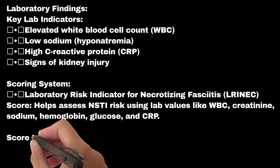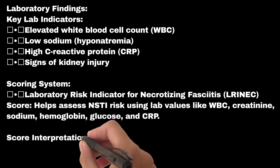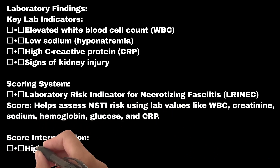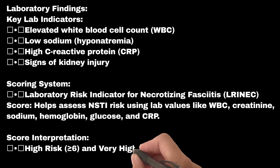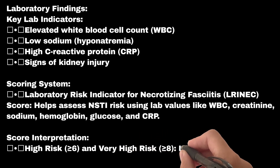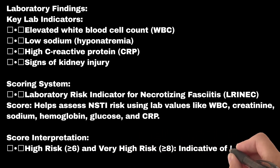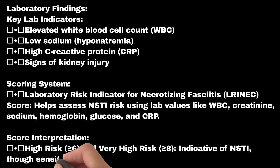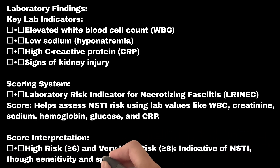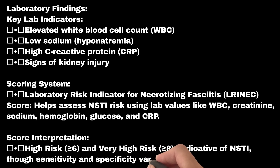LRINEC score interpretation: high risk is a score greater than or equal to 6, and very high risk is greater than or equal to 8. These scores are indicative of NSTI, though sensitivity and specificity vary widely.